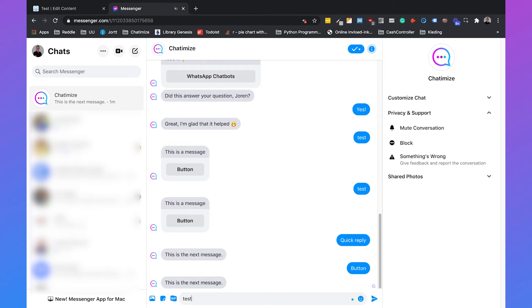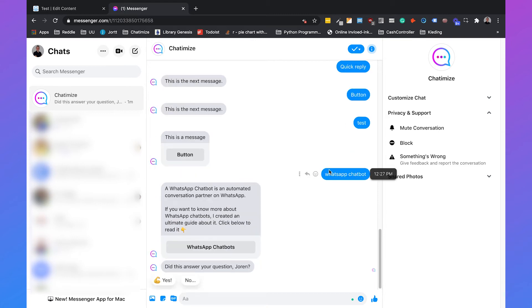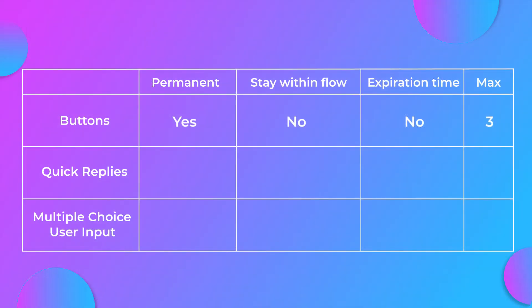Also, if we trigger the message again and want to go to another flow — for example, 'WhatsApp chatbot' — that's also possible. So to summarize: is the quick reply permanent? No. Does the user stay within the flow? Also no — they can just switch flows. Can we set an expiration time? Also no. This is also doable by using an action, a condition, and a smart delay, but again I would not recommend this. The main important difference is that you can set a maximum of 11 quick replies, versus only three buttons.